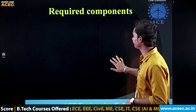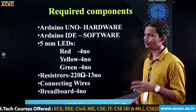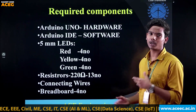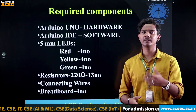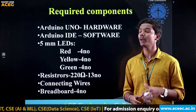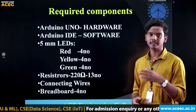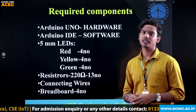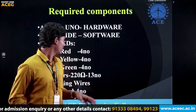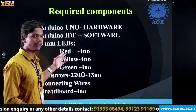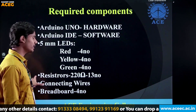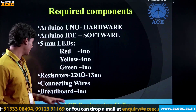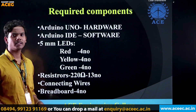We require some components for this prototype project. There are six types of components: the first is the Arduino Uno hardware, the second is the Arduino IDE software, the third is the LED (light-emitting diode) which comes in three colors — red, yellow, and green. Next are resistors of 220 ohms, connecting wires, and finally a breadboard.